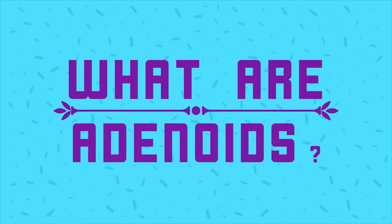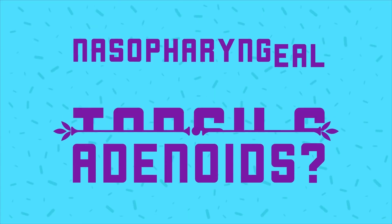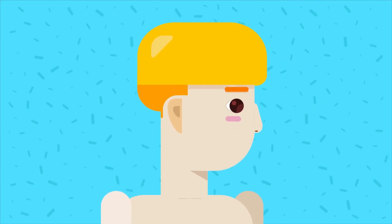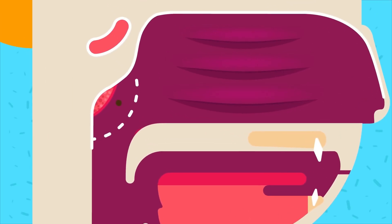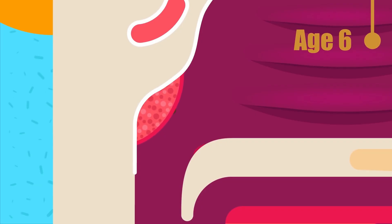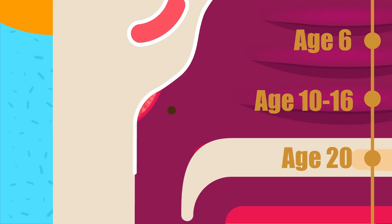Adenoids. What are adenoids? The nasopharyngeal tonsils, commonly called adenoids, are situated at the junction of the roof and posterior wall of the nasopharynx. Adenoid tissue is present at birth, shows physiological enlargement up to the age of 6 years, and then tends to atrophy at puberty and almost completely disappears by the age of 20.